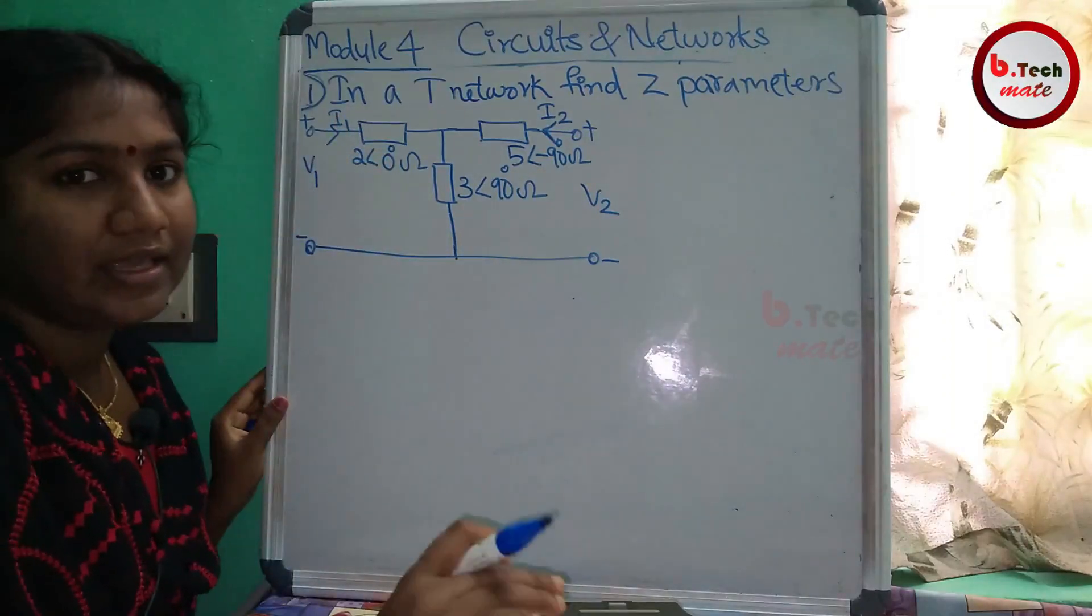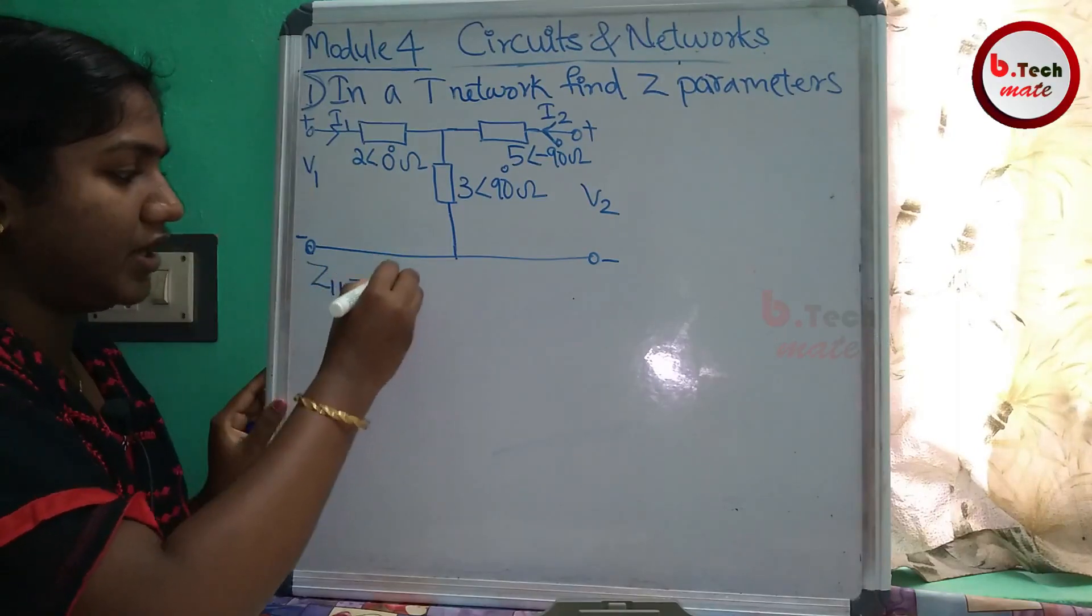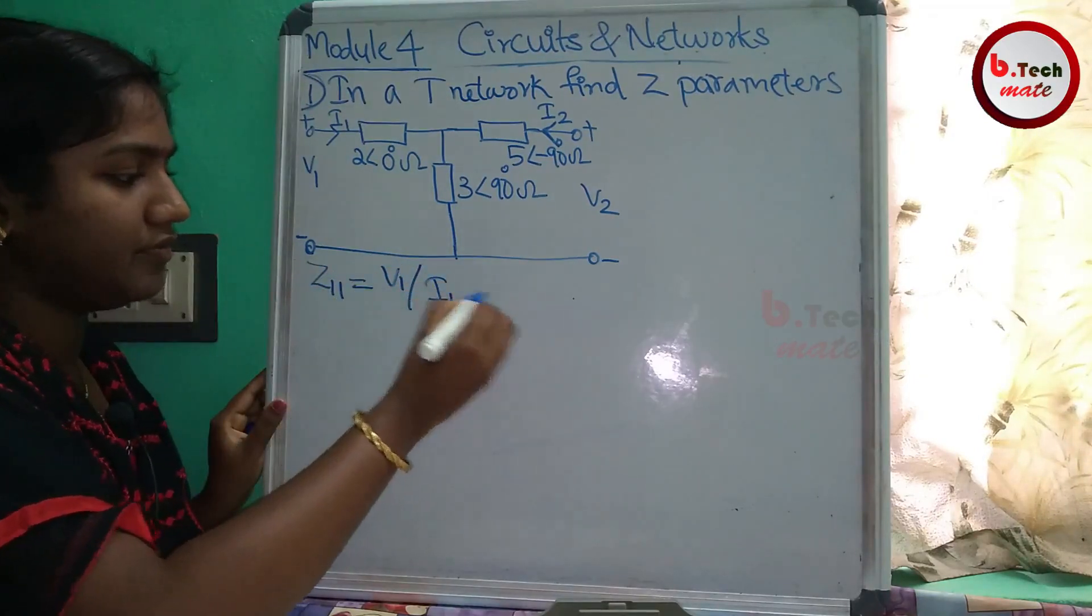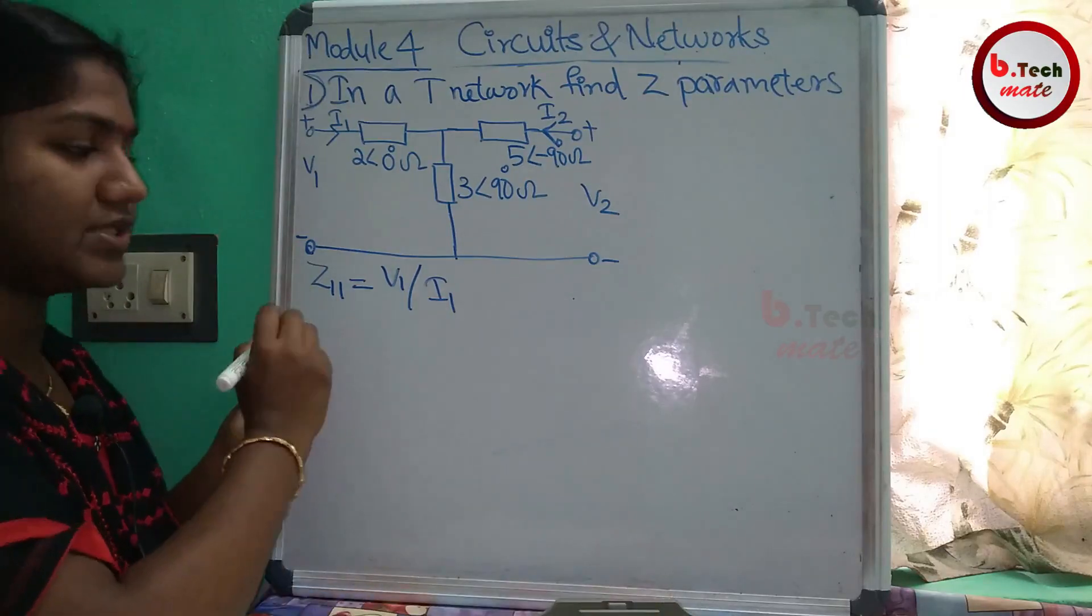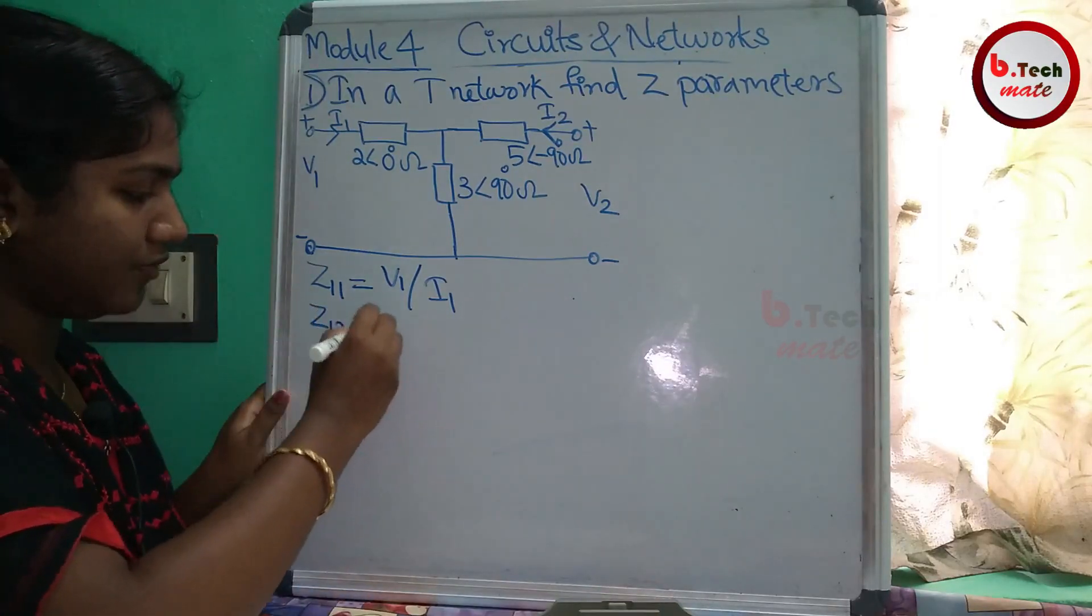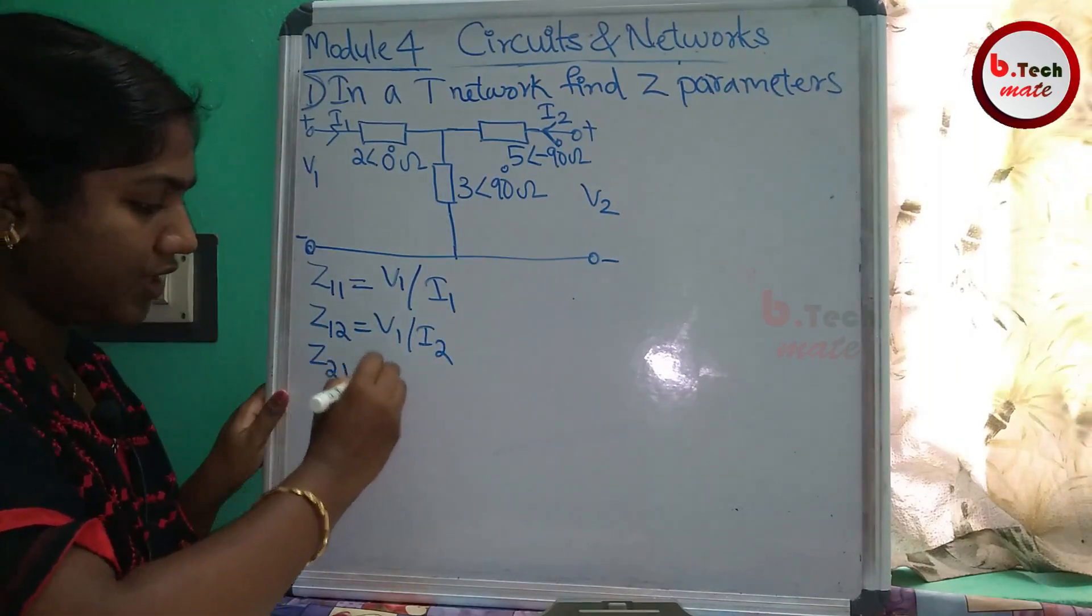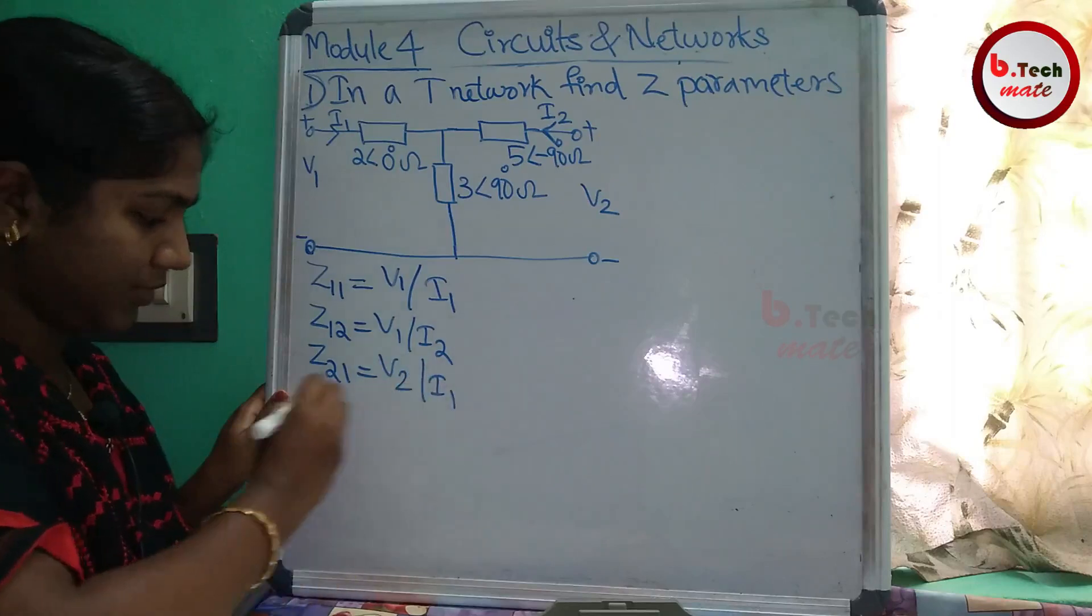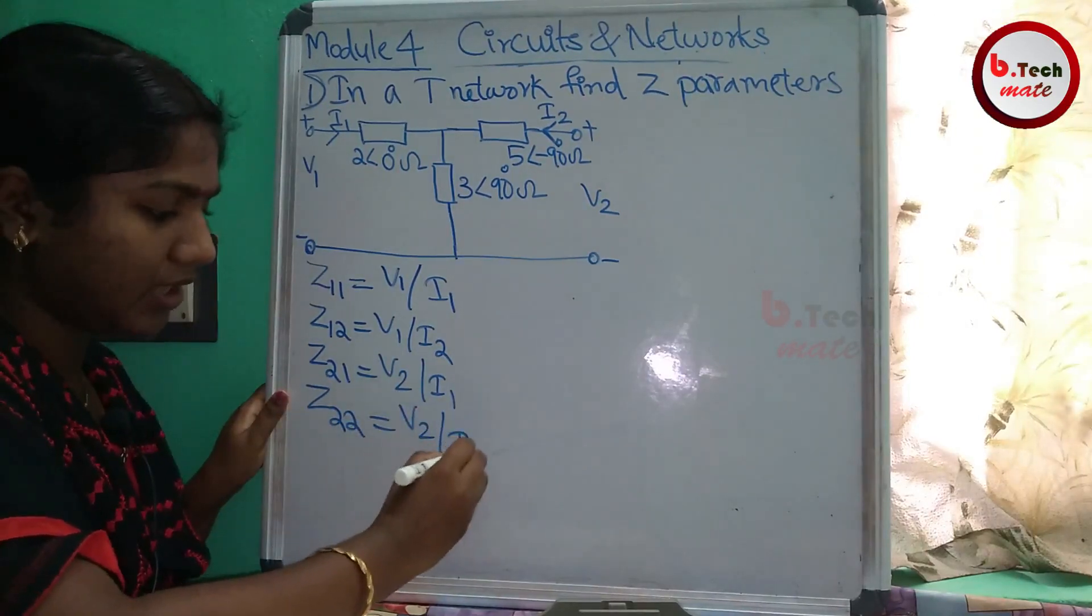Now we have the Z-parameters. We can find Z11 which is V1 by I1. We can find the four parameters: Z11, Z12 which is V1 by I2, Z21 which is V2 by I1, and Z22 which is V2 by I2. These are the four equations.